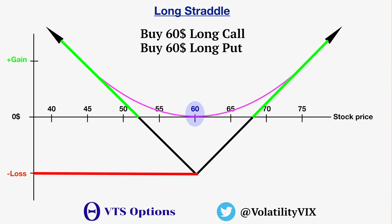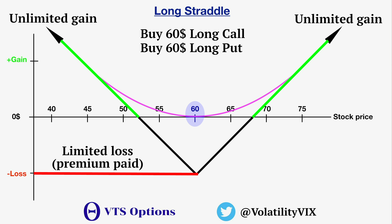We're fairly indifferent to the direction. We just want it to make a larger move — that's how the trade makes money. Since these are both long options that you're paying a debit to open, the maximum loss for the trade is capped. You can't lose more than the premium you paid to open the contract. For the maximum gain, it is essentially unlimited. On the upside, it's definitely unlimited because there is no limit to how high a stock can go. And on the downside, while it is technically limited because stocks can only go to zero, practically speaking that's a long way down, so the maximum gain is basically unlimited in both directions. The more it moves, the more profit the trade can make.